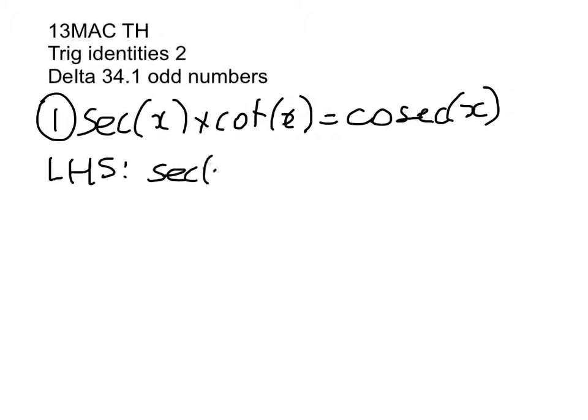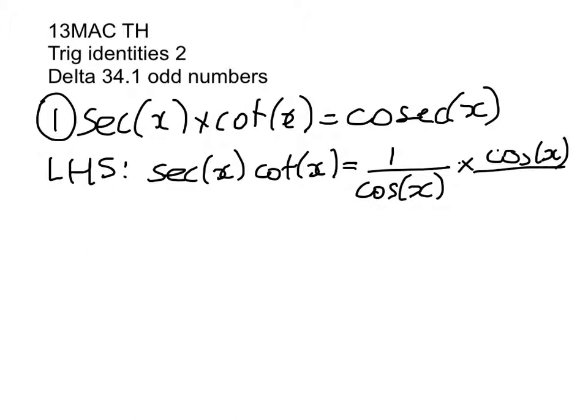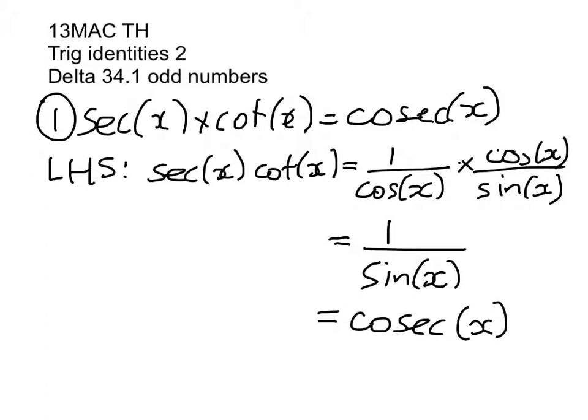So sec(x)cot(x) is equal to 1 over cos(x) times cos(x) over sin(x). So really all these are is algebra. Right, so there we've got 1 over sin(x) which is equal to cosec(x). Right, so first one done.